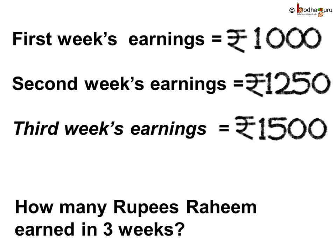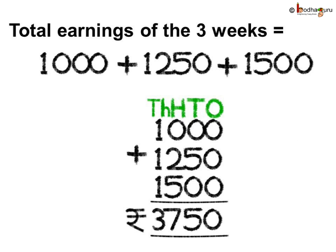Now we need to find the total earnings of the three weeks. For that we need to add all the earnings of week 1, 2, and 3. So the total money earned is rupees 1000 plus 1250 plus 1500.